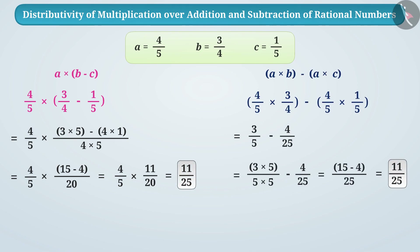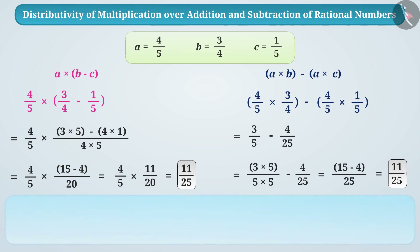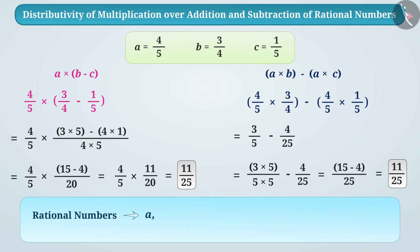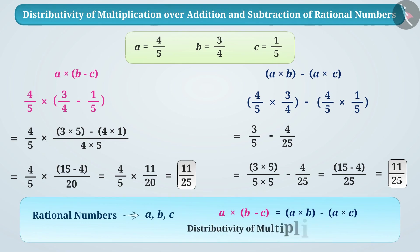What does this tell you? We can say that for any three rational numbers a, b, c: a × (b − c) = a × b − a × c. We call this the distributivity of multiplication over subtraction.